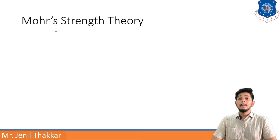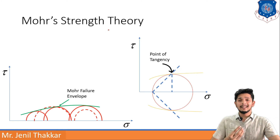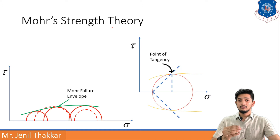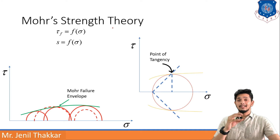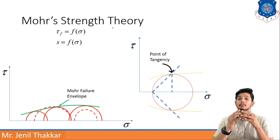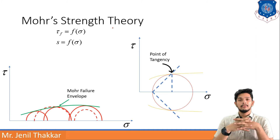Mohr's Strength Theory is based on a hypothesis of soil failure. Mohr's hypothesis states that at the time of failure of soil, at the failure plane, the failure shear stress is a direct function of normal stress. That means we can write it as τ_f, that is shear stress at failure, is a function of σ, that is normal stress. The ultimate stress at failure is the shear strength of the soil, so we can also write S in place of τ_f. Thus S is equal to a function of σ.